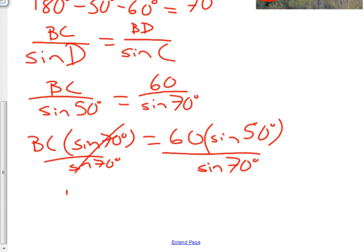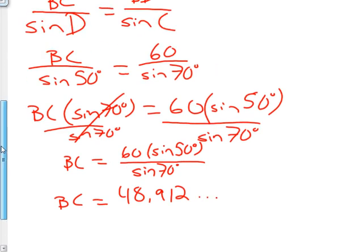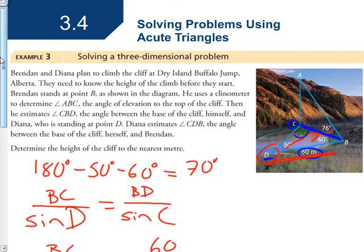To get that BC is equal to 60 times sine 50, all over sine of 70 degrees. I can plug that into my calculator and I end up getting that segment BC is equal to 48.912 with a lot of decimals. Okay, so now I know that this is 48.912.